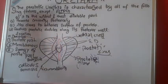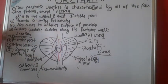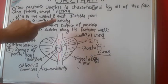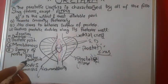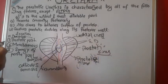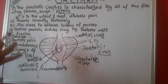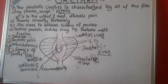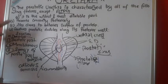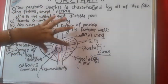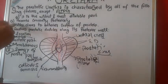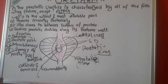The question asks: the prostatic urethra is characterized by all of the following features except. Option A — it is the widest and most dilatable part — is correct, as stated earlier. The prostatic urethra is the widest and most dilatable among the three parts. Option B — it lies closer to the anterior surface of the prostate — is also correct.